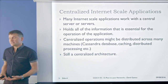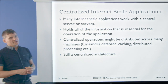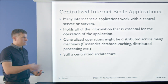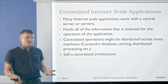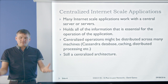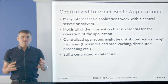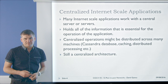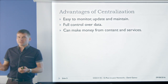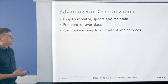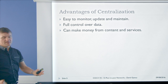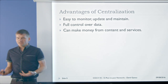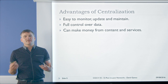A lot of internet-scale applications have a central server that holds all of the relevant information. It might use lots of different machines — like a Cassandra database — with distributed data processing, but essentially all of the information is managed and held in a single place. If you blow that place up and all its copies, you'd lose all the information. These are centralized architectures, and they have many advantages: they're easy to monitor, easy to update and maintain, and you have full control over the data. All the big commercial websites are making money, which is what pays for the servers.